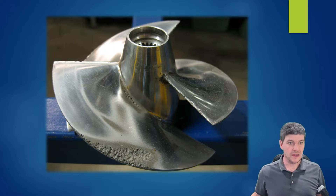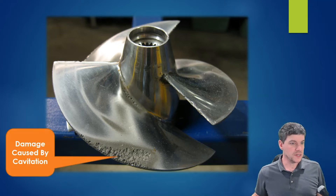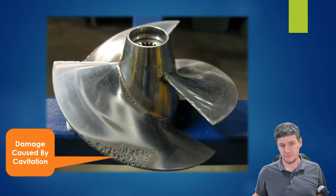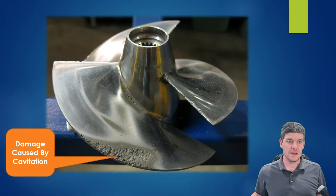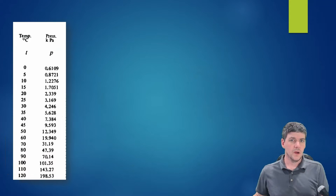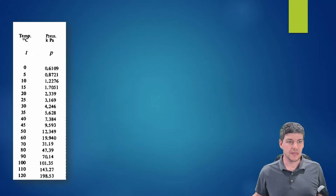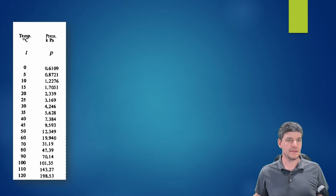Here we've got a pump impeller showing what looks like cavitation damage — essentially little holes smashed into the surface. Cavitation is a problem that occurs if our pumping system is not performing correctly. To understand how cavitation develops, we need to know the relationship between temperature and pressure when it comes to phase changes in a liquid. Here's a table of water showing temperature versus pressure at saturation conditions.